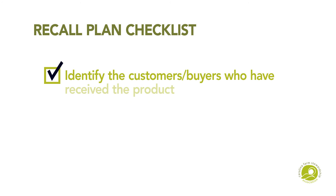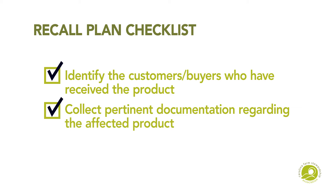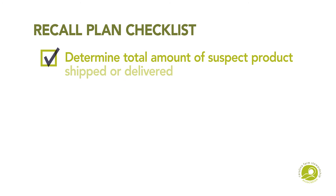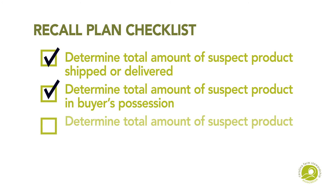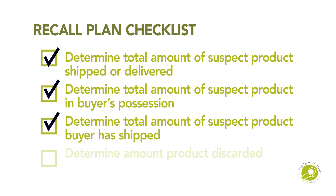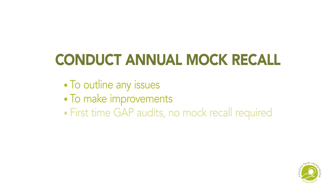Identifying the customers or buyers who have received the product and collecting pertinent documentation regarding the affected product. This includes determining the total amount of suspect products shipped or delivered, the total amount of product in buyer's possession, the total amount of suspect product the buyer has shipped, and any product that has been discarded. Conduct an annual mock recall to outline any issues in the recall plan and to make improvements. If this is your first time undergoing a GAP audit, a mock recall will not be required.